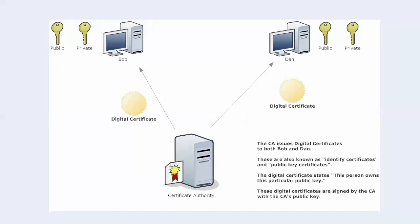If all goes well — and in this example it does — the certificate authority is sending Bob and Dan something: a digital certificate. It's issuing digital certificates to both Bob and Dan. Digital certificates are also known as identity certificates and public key certificates. The digital certificate states fundamentally that this person owns this particular public key because I say so — that's really what the CA is saying. This certificate is also going to contain some PKI-related information, which we're going to go through in the next section of the course.